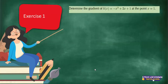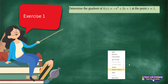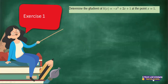Yesterday I gave you homework, so we're going to go through the homework problems. Let's say you're supposed to determine the gradient. Our function is k(x) equals negative x cubed plus 2x plus 1, and we are given one point.